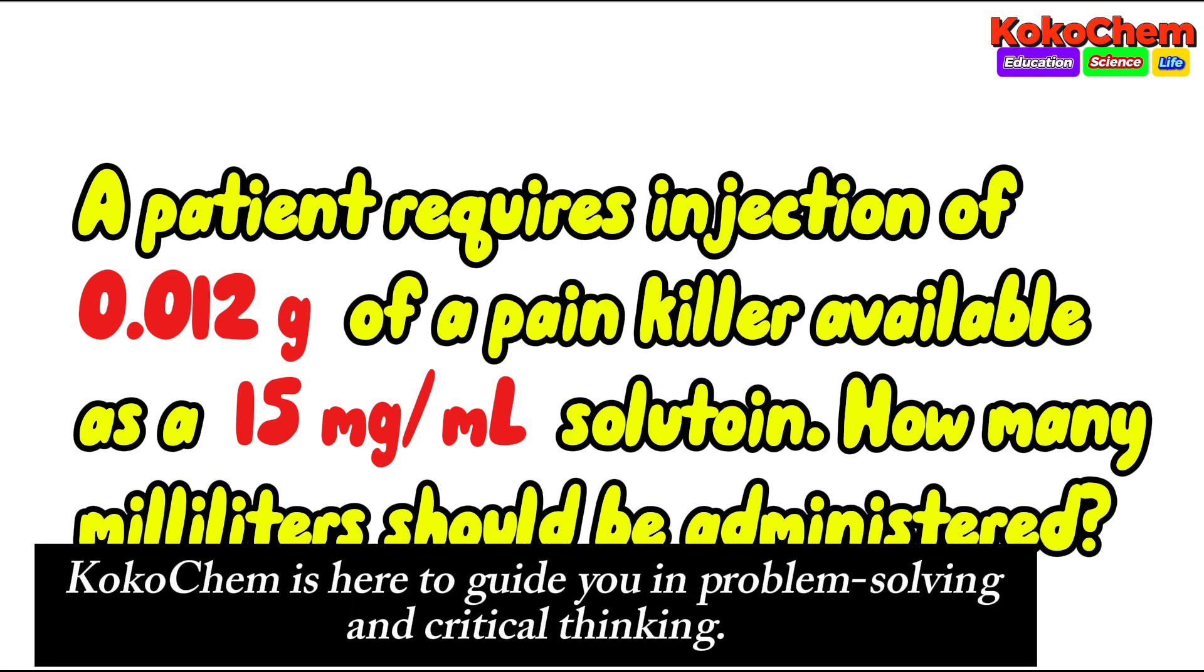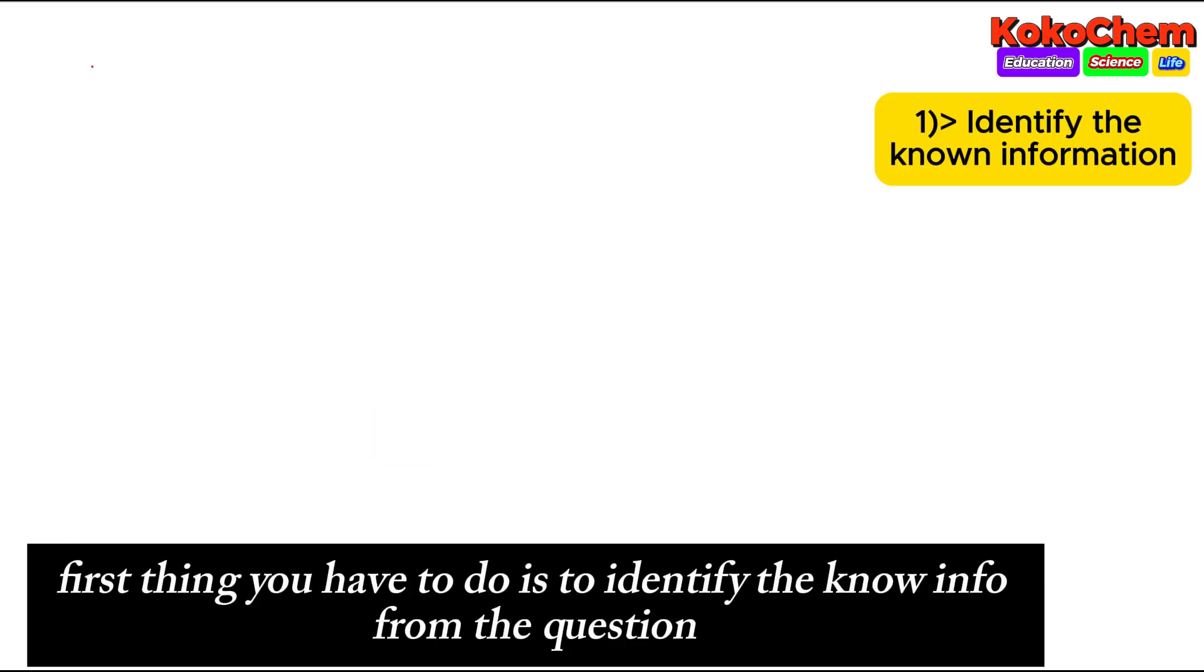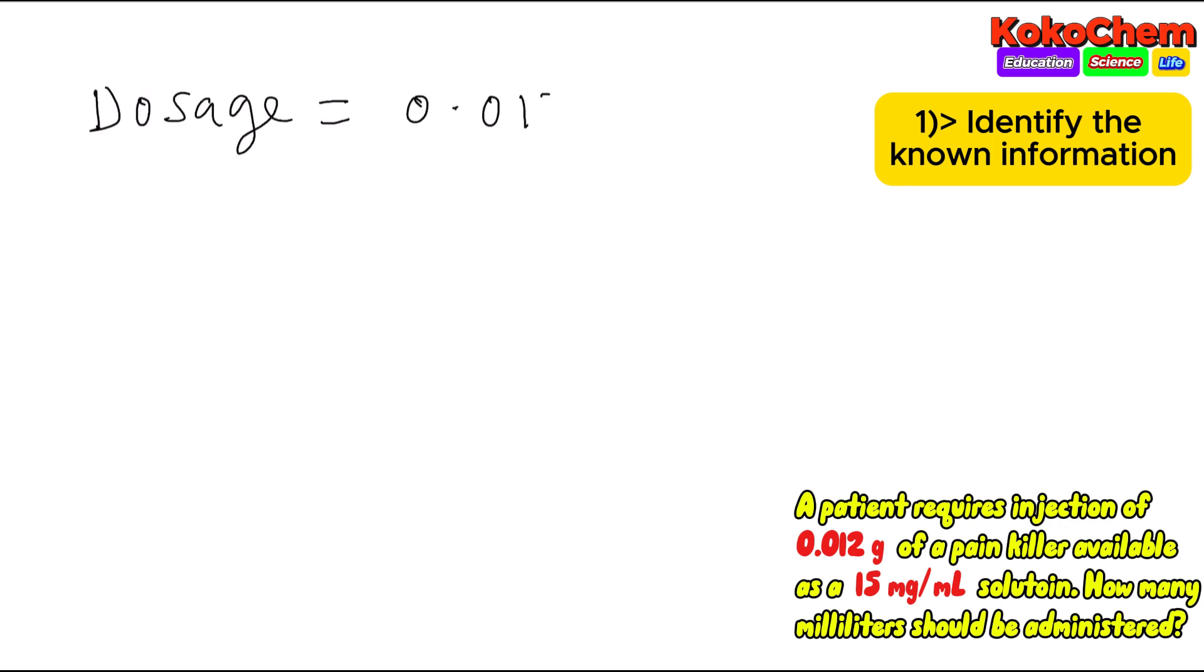First thing you have to do is identify the known information from the question. The dosage you know is 0.012 grams and the concentration is 15 milligram per ml. That's the information in the question.